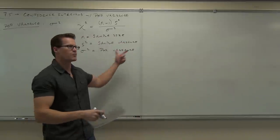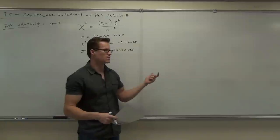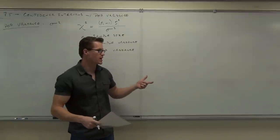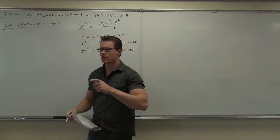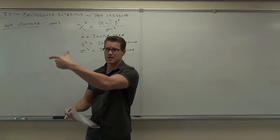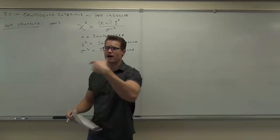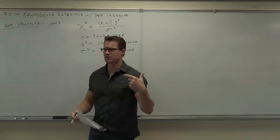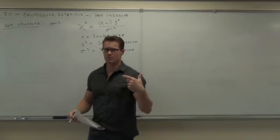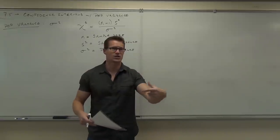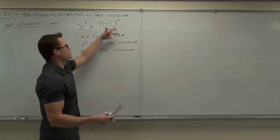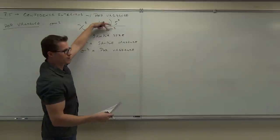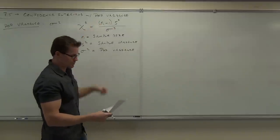Every time we have a marker, it's typically based on sample size and comparing two things. With our means, it was sample mean minus population mean, compared to standard deviation and sample size. Here, we're just using our variances and our sample size.